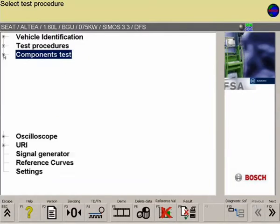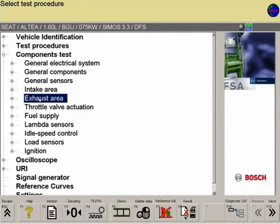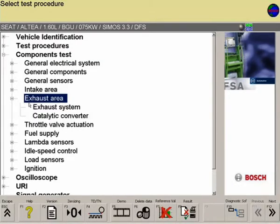In the component test menu of the FSA software, the catalytic converter component can be found under Exhaust Area.